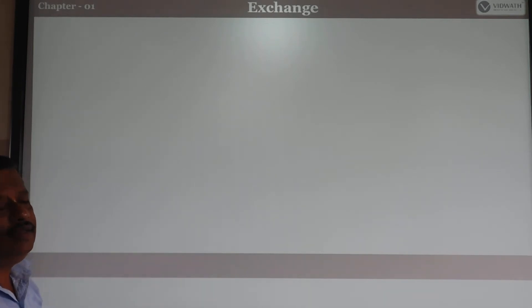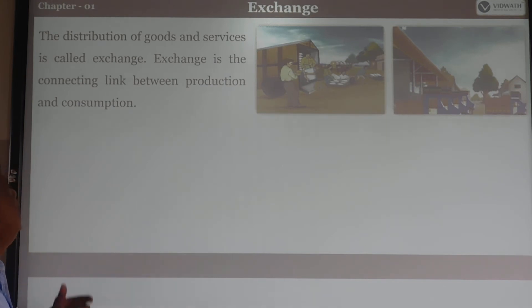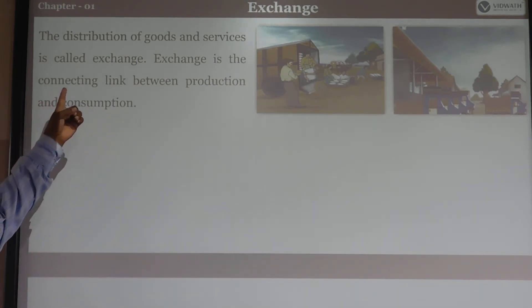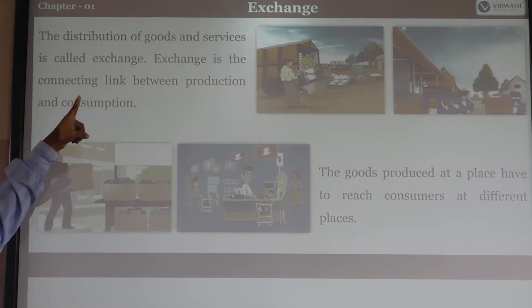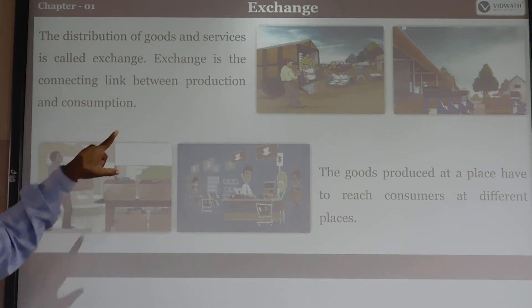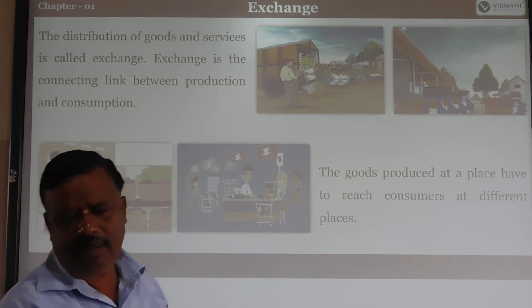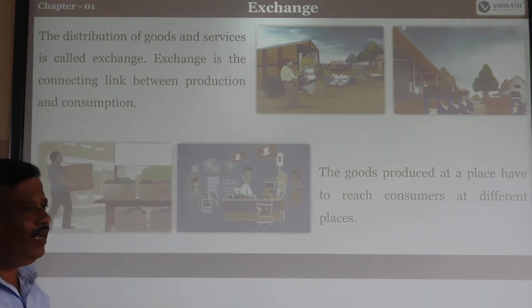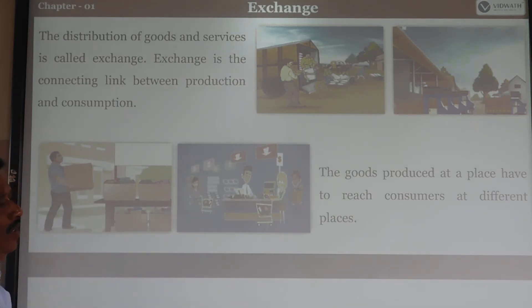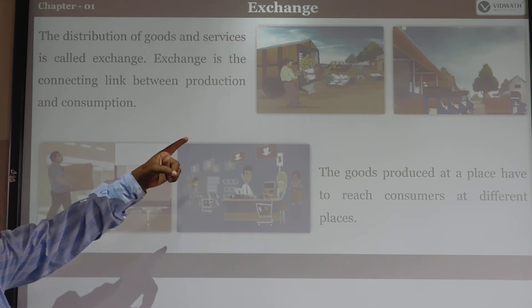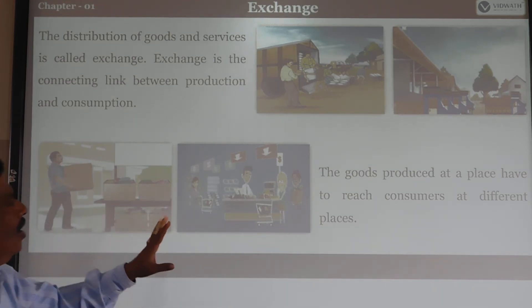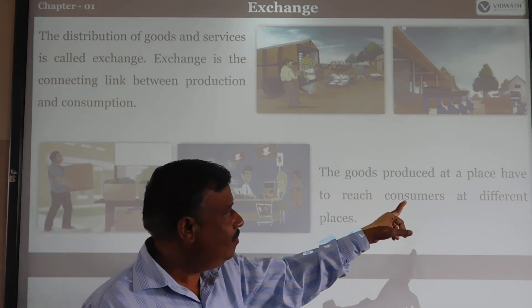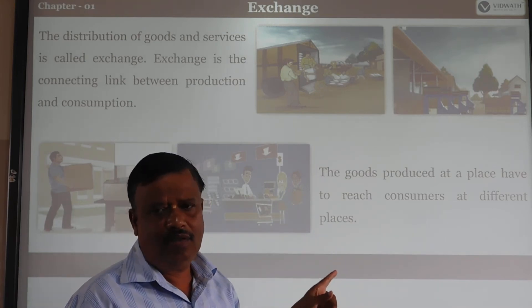Next is exchange. The distribution of goods and services is called exchange. Exchange is the connecting link between production and consumption. The producer produces something, and exchange links producer and consumer. Goods produced at a particular place have to reach consumers at different places — that is the exchange. The shopkeeper or distributor is the supplier who connects producer to consumer.